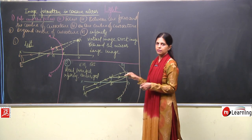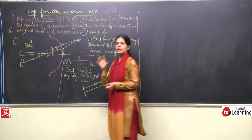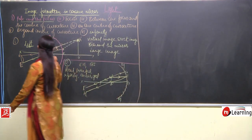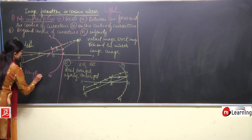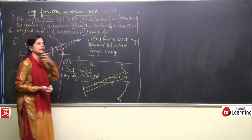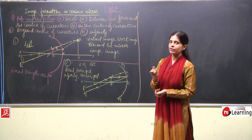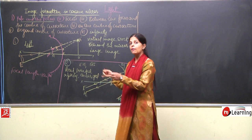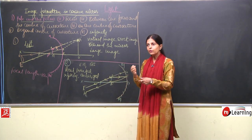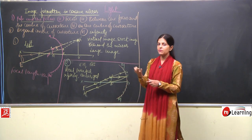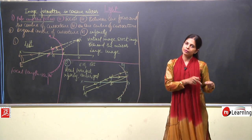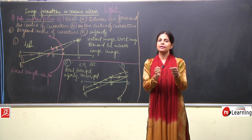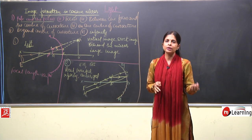So this is the second position where the object is kept on the focus. Now suppose the focal length is 10 centimeters — the distance between the focus and the pole. In all the cases we have been discussing, we have decided the focal length is 10 centimeters. Now I am explaining why we need to know what kind of image is formed by keeping the object at various places.